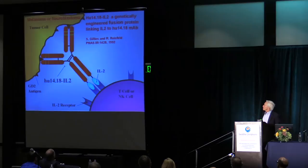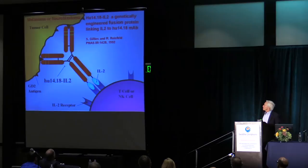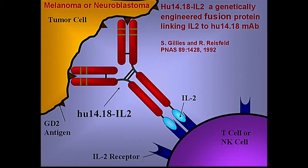The next step is to take that anti-GD2 antibody and genetically engineer it. We've been working with Ralph Reisfeld and Steve Gillies on a fusion protein that has IL-2 on the carboxy-terminus of the immunoglobulin heavy chain. The idea is to let this antibody mediate ADCC but also let it bind to IL-2 receptors on NK cells or T cells, help bridge those cells directly to tumor cells, and facilitate activity.